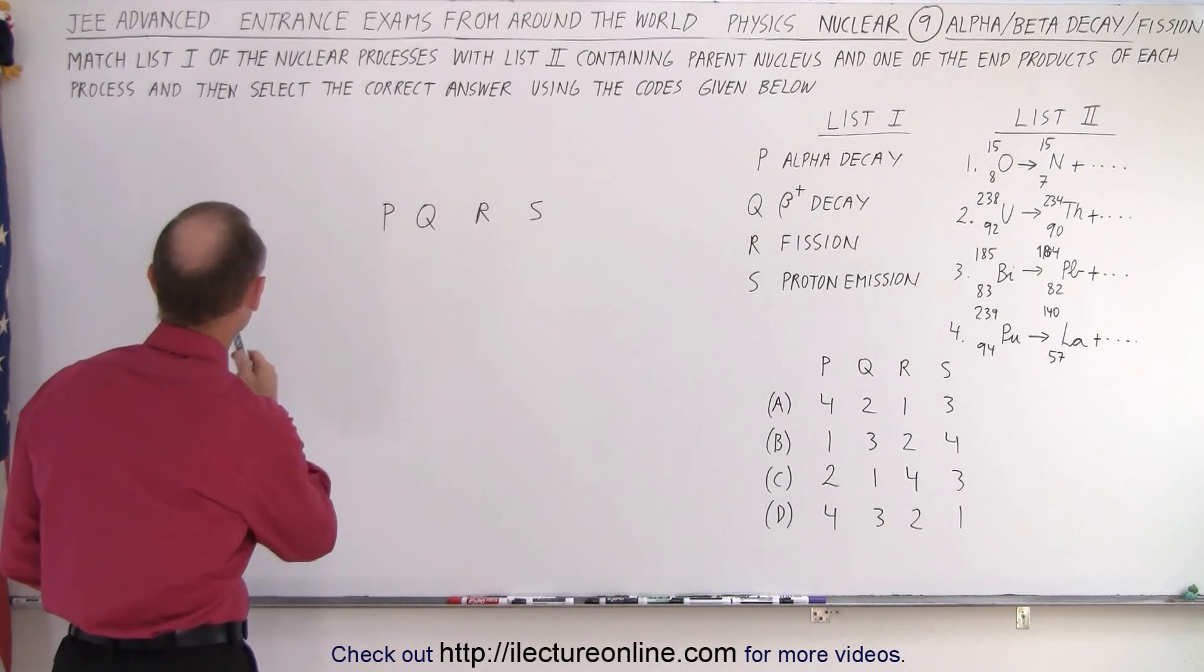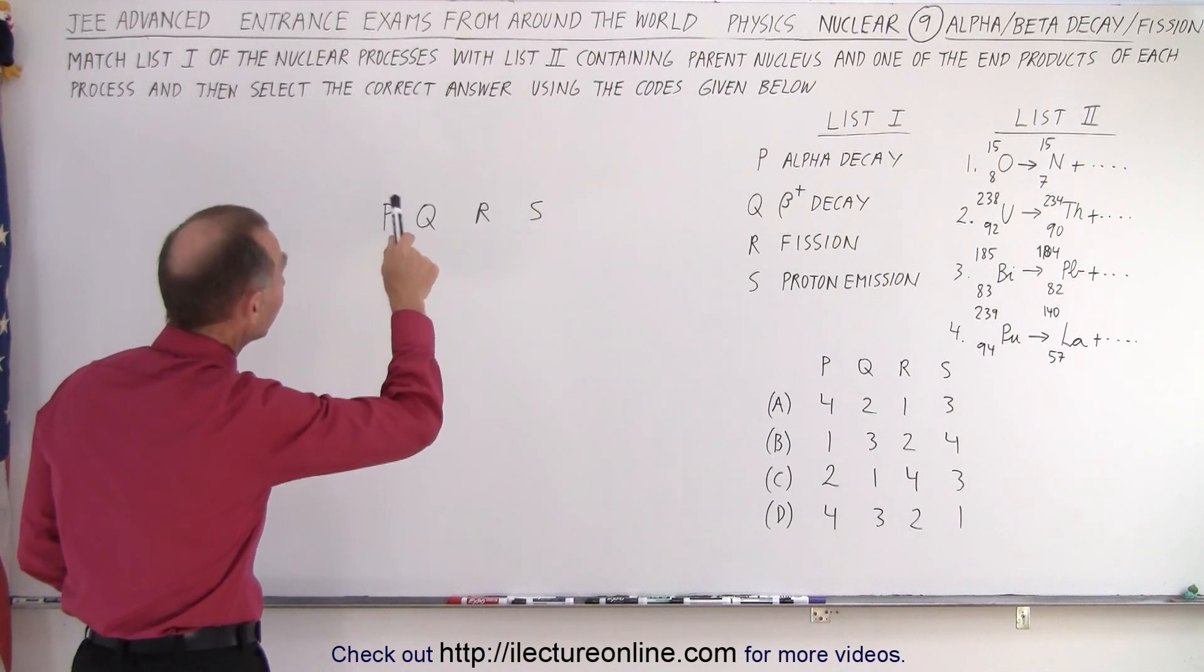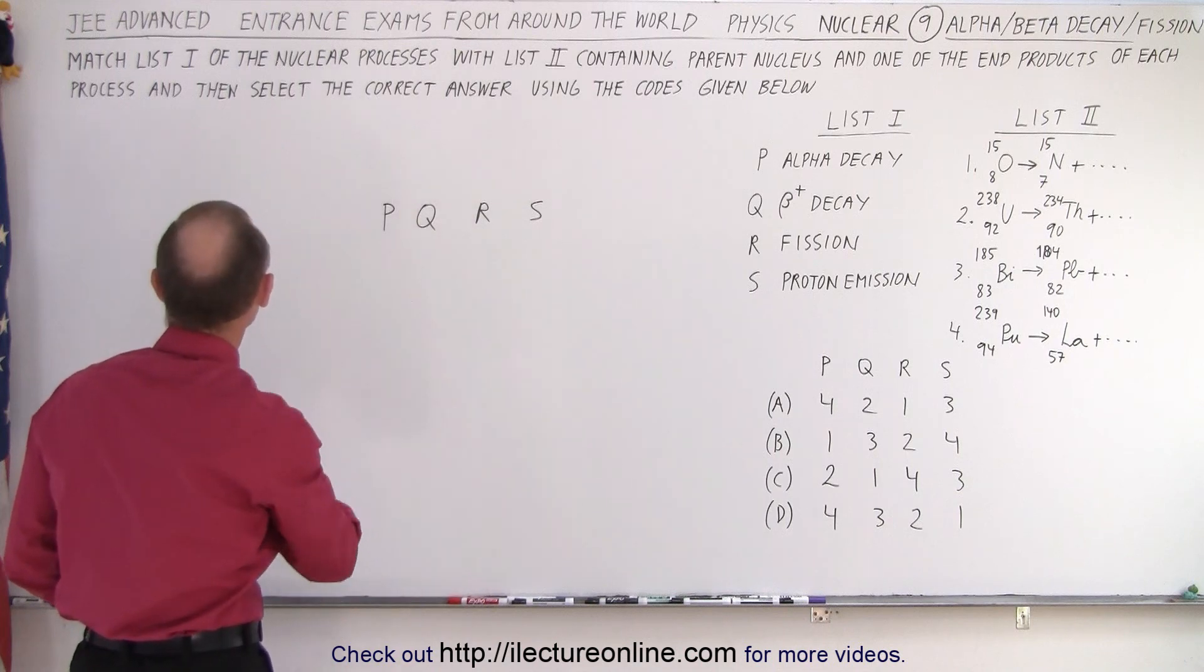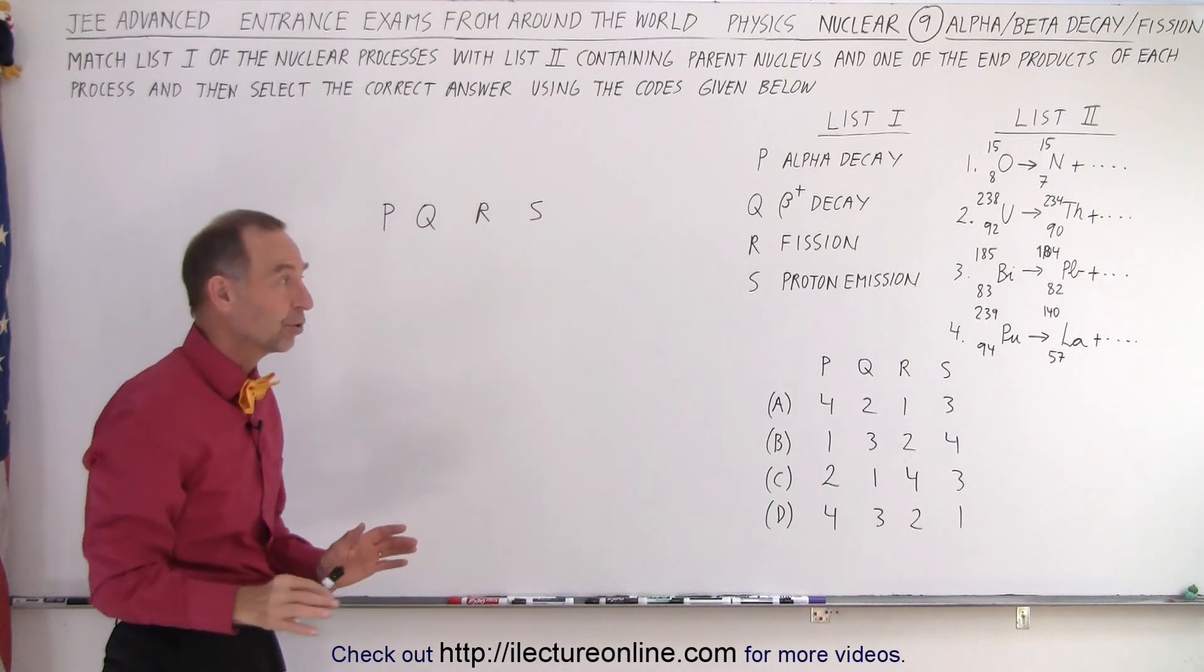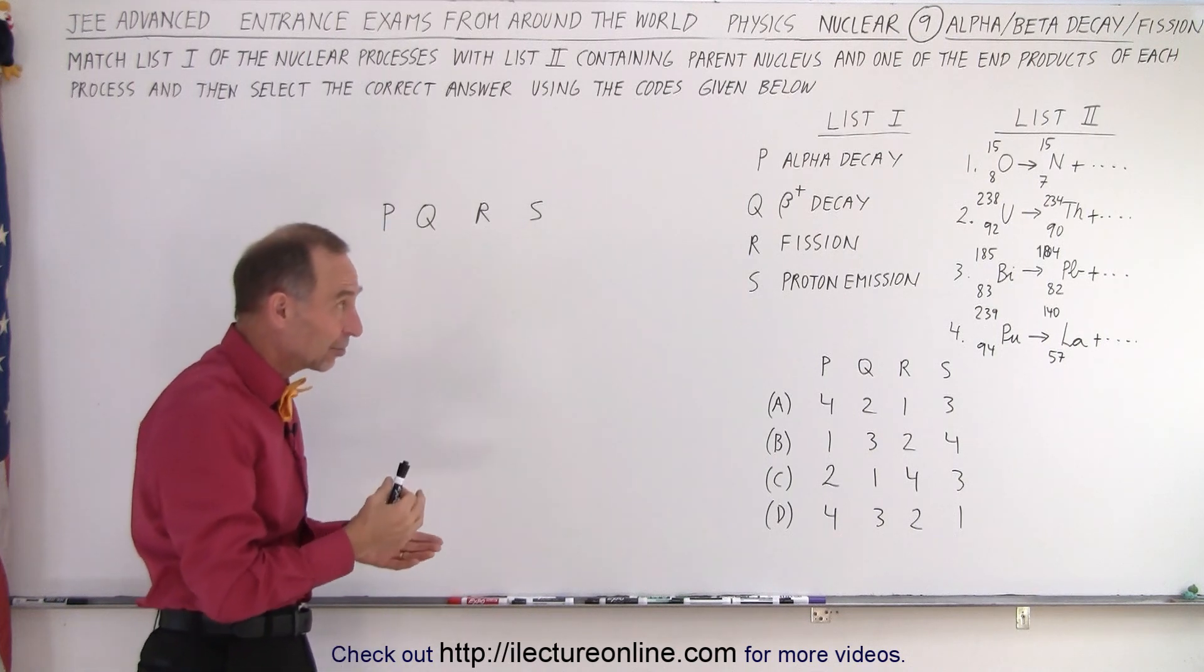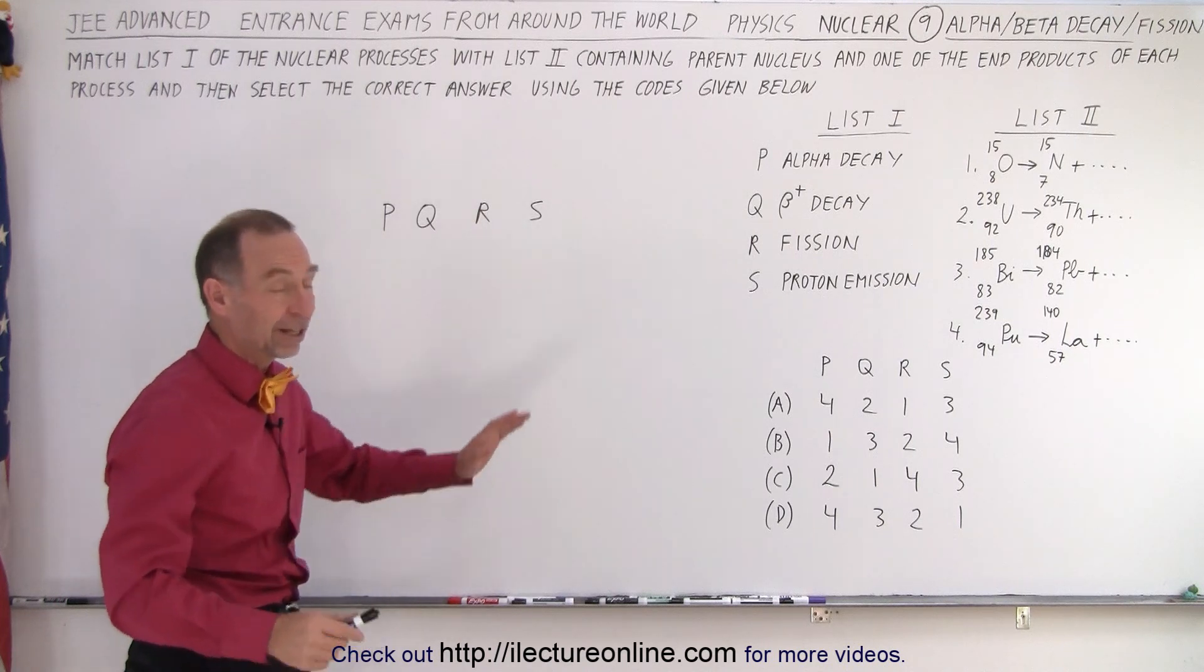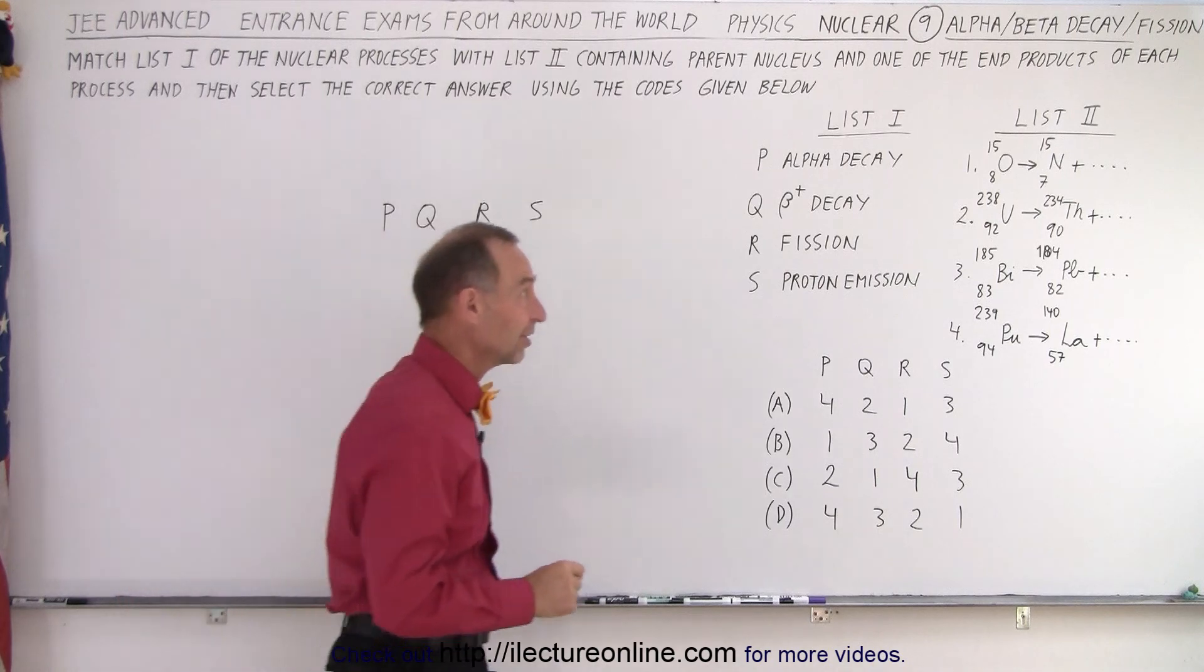But let's read the question together. It says, match list one of the nuclear processes with list two containing parent nucleus and one of the end products of each of the process and then select the correct answer using the codes given below. All right, so I find that if you're familiar with some of these particular reactions then the whole problem becomes really easy and quick. For example,